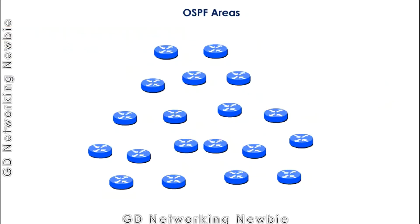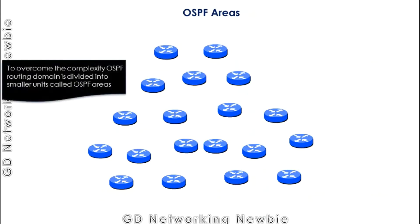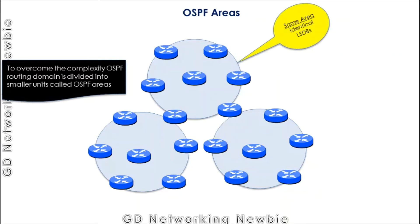The solution is to overcome the complexity of OSPF by dividing the routing domain into smaller units known as OSPF areas. Some routers are placed in one area, some in another, and the rest in other areas. Now, only routers within the same area will have identical Link State Databases — they maintain their LSDB locally, and all routers in an area will have identical copies of that LSDB.